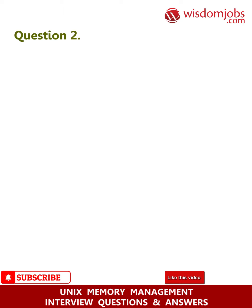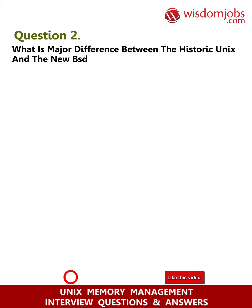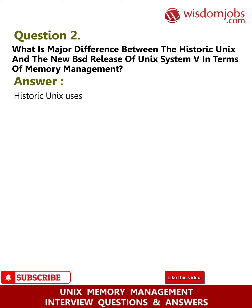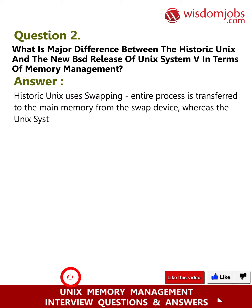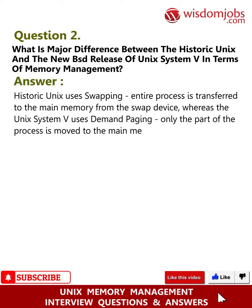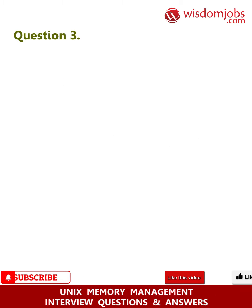Question 2: What is the major difference between historic Unix and the new BSD release of Unix System V in terms of memory management? Answer: Historic Unix uses swapping — the entire process is transferred to main memory from the swap device. Whereas Unix System V uses demand paging — only part of the process is moved to main memory. Historic Unix uses one swap device, while Unix System V allows multiple swap devices.